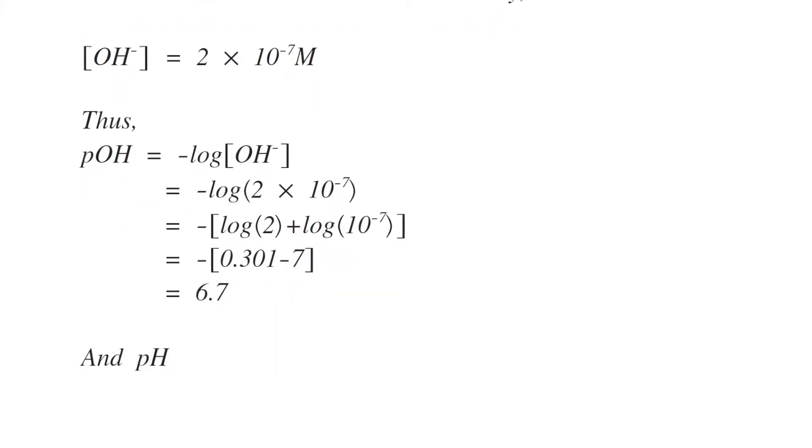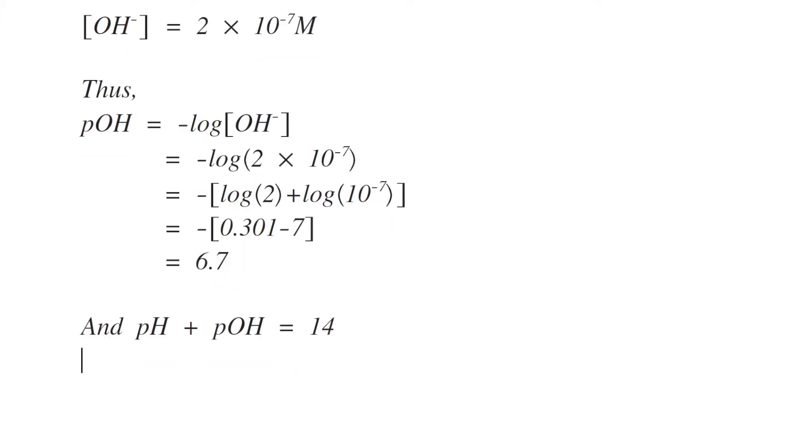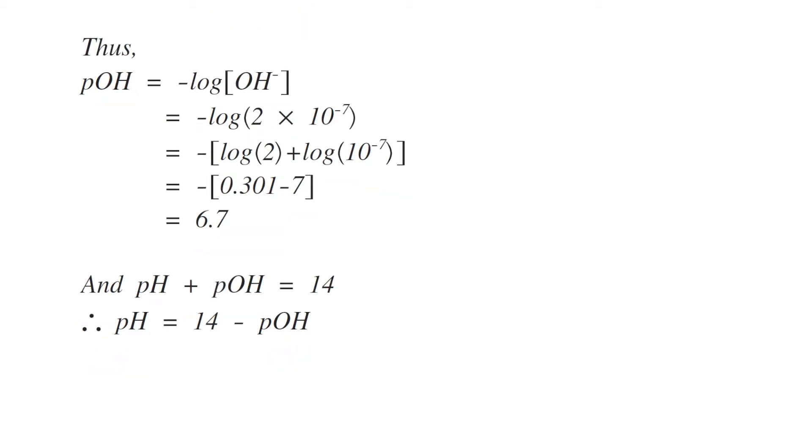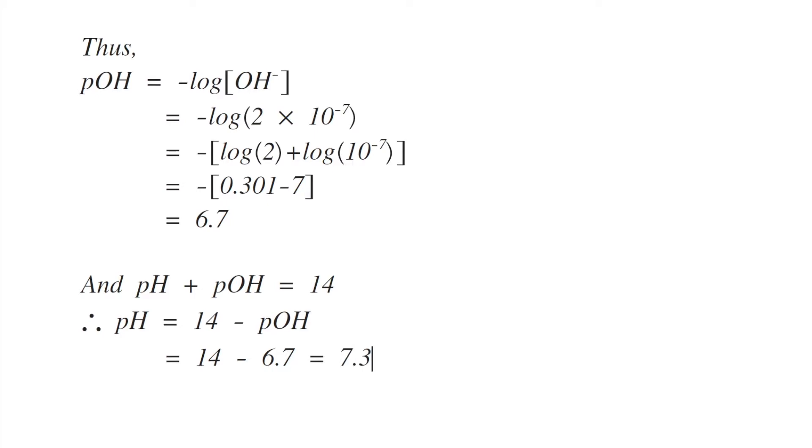by using the formula pH plus pOH is equals to 14. So therefore pH is equals to 14 minus pOH. This is equals to 14 minus 6.7, which comes around 7.3. So that is the pH of the given solution.